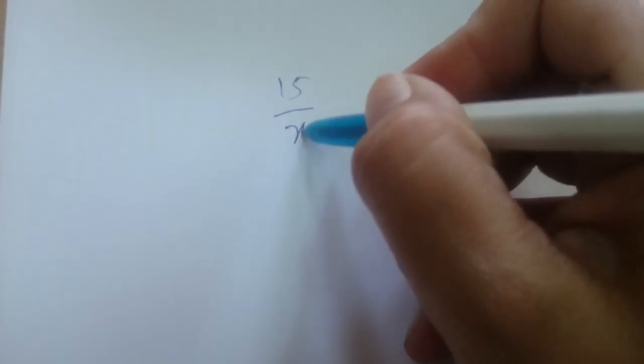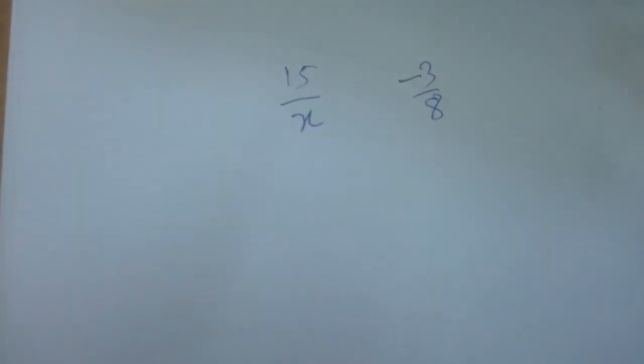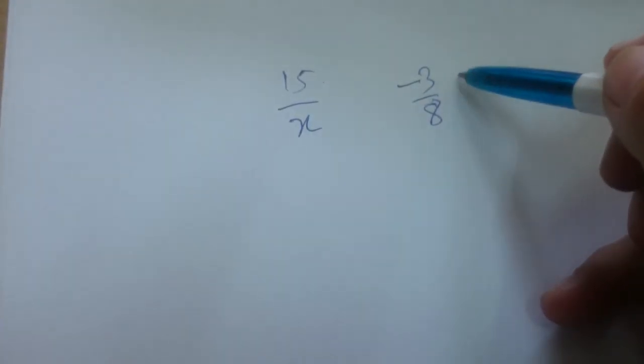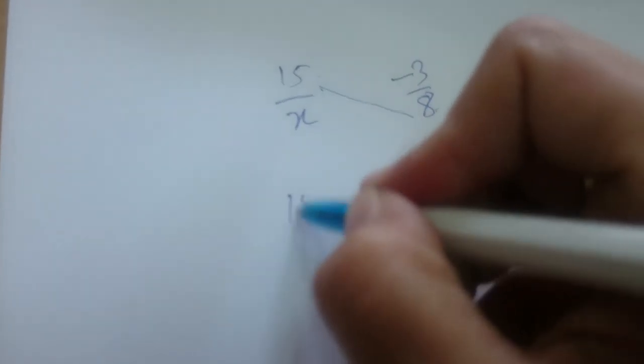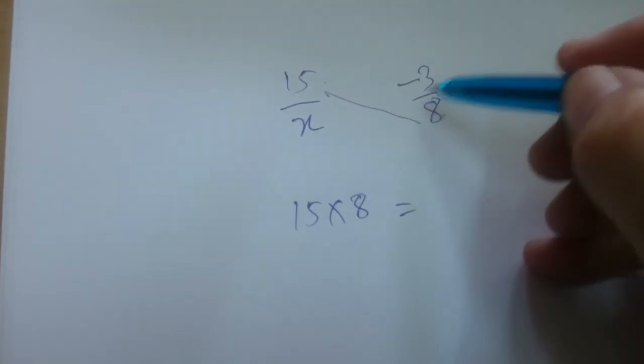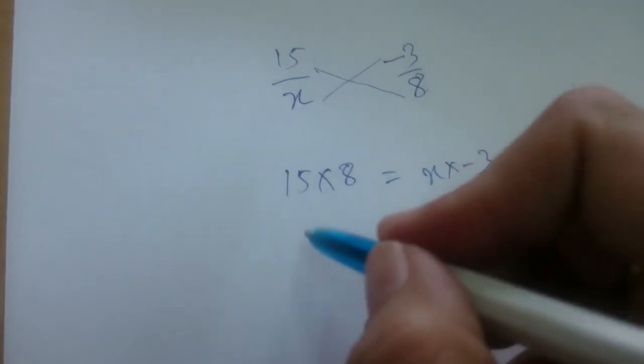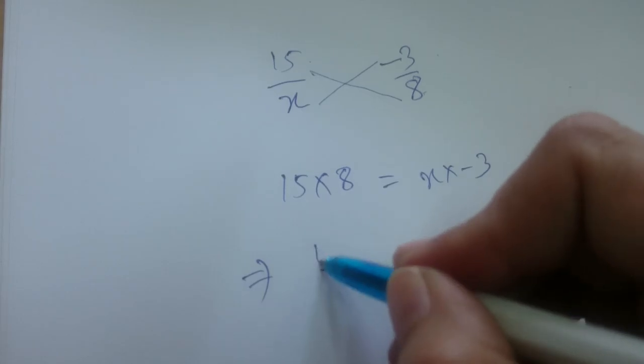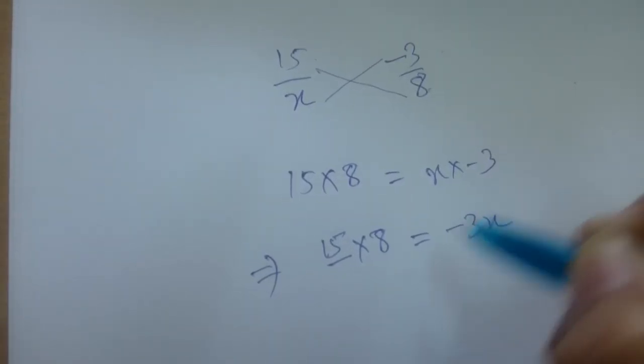Let's take another example. We have to find x such that 15/x and -3/8 are equivalent rational numbers. Since 15/x and -3/8 are equivalent rational numbers, therefore 15×8 equals x×(-3). This implies 15×8 equals -3x.